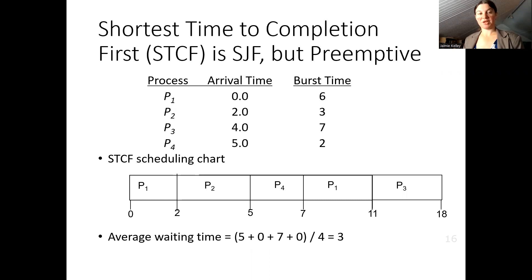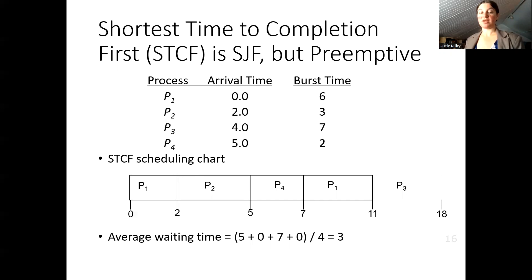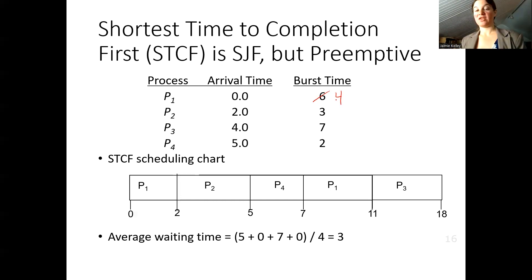Preemptive scheduling algorithms get more complicated. Shortest Time to Completion First is very much like Shortest Job First, but it is preemptive. Whenever a process enters the system that has a shorter time left to complete, the CPU can be taken away from the currently running process. In this example, process one is first in the system at time zero and gets to run, but at time two it only has four milliseconds left and process two has three left, so process two gets to run.